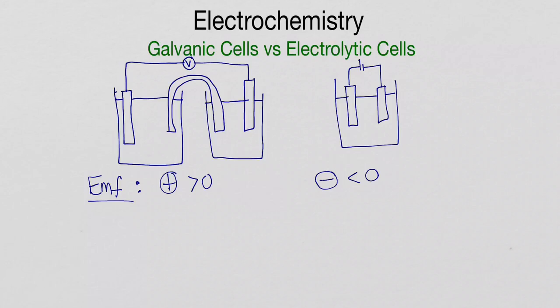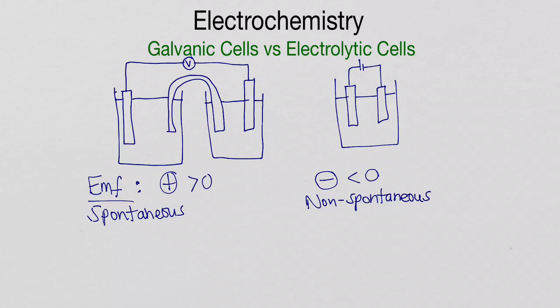The second difference: because the EMF is positive for galvanic cells, it means those reactions take place spontaneously. Electrolytic cells, on the other hand, are non-spontaneous. That is why in the sketch we have a battery — we need some extra energy input because the reaction is not going to happen on its own.